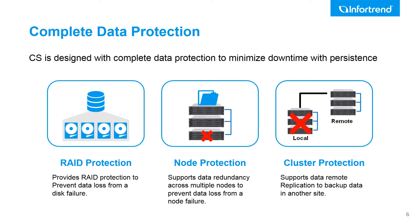What makes EonStore CS special is its three-layer data protection architecture. At the bottom, all the disks are protected by RAID technology. The system performance will not degrade when multiple drives fail on different nodes. For node protection, EonStore CS supports protection against node failures.